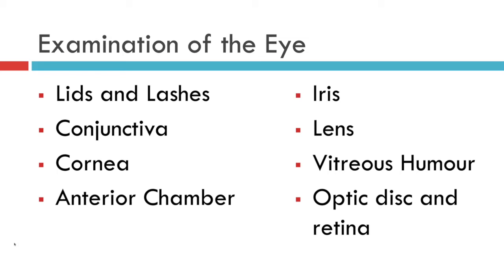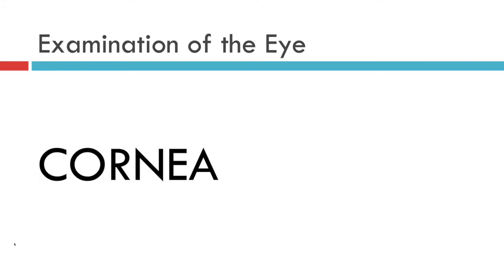This video is about how to examine the cornea. The cornea's function is to act as a refracting — that is to say, focusing — surface. It therefore needs to be spherical and crystal clear.